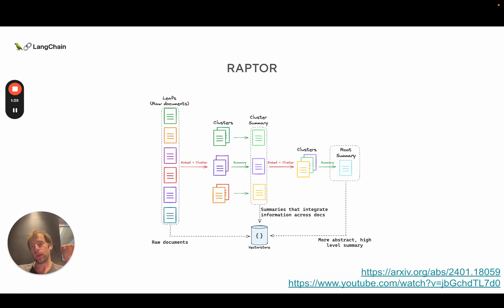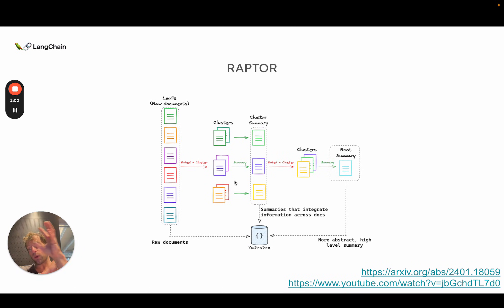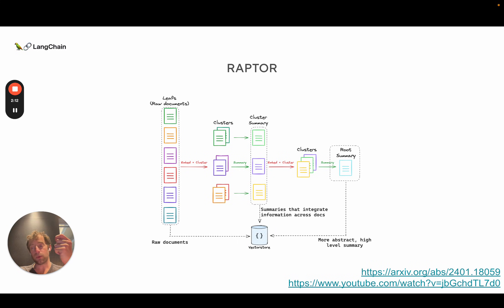RAPTOR is basically a way to build a hierarchical index of document summaries. The intuition is: you start with a set of documents as your leaves on the left, you cluster them, and then you summarize each cluster. Each cluster of similar documents consolidates information from across your context — which could be many splits or many documents. You do that recursively until you hit a limit or end up with one single cluster that is a very high-level summary of all your documents.